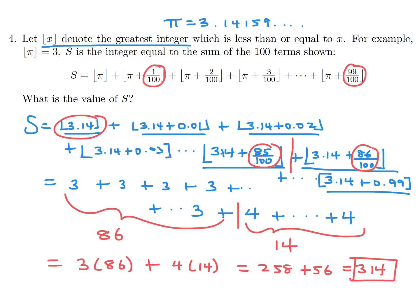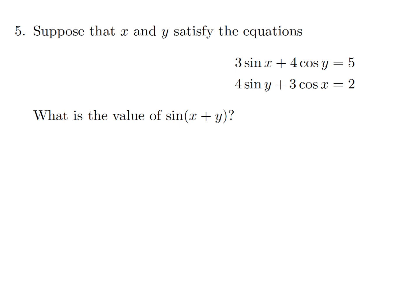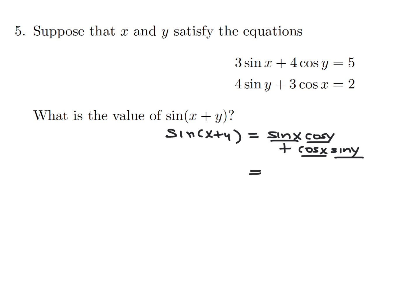Suppose x and y satisfy: 3 sin x + 4 cos y = 5, and 4 sin y + 3 cos x = 2. What is the value of sin(x + y)? The identity for sin(x + y) is sin x cos y + cos x sin y. For simplicity, let sin x = a, cos y = b, cos x = c, and sin y = d.